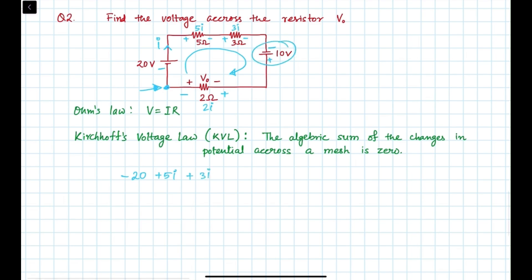That will equal 0. Then we will get 10I equals 30, so I is equal to 3 amperes. Now if I is equal to 3 amperes, then 2I is equal to 3 times 2, that will be 6.